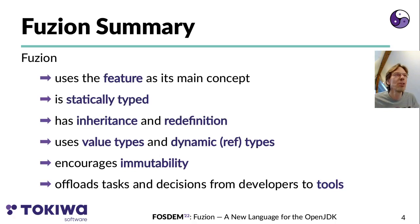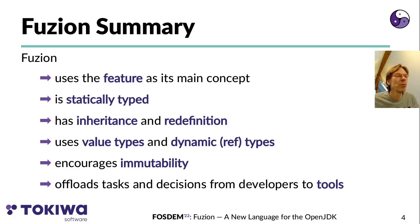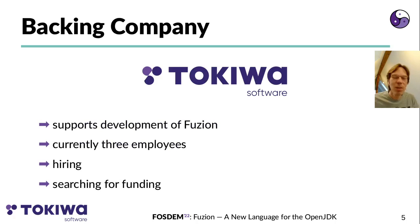A short summary of the main Fusion features: it uses 'feature' as its main concept, it is statically typed, uses inheritance and redefinition, defaults to value types but also supports dynamic reference types, encourages immutability, and offloads tasks and decisions to tools as much as possible. Development of Fusion is backed by a company called Tokiwa Software GmbH. We currently have three employees — the team is way too small, we are hiring, and we are also searching for funding.